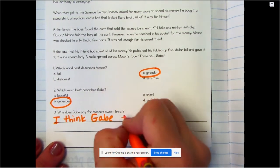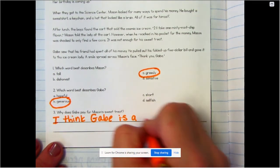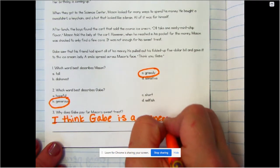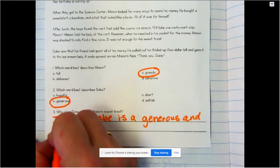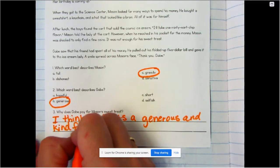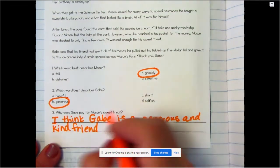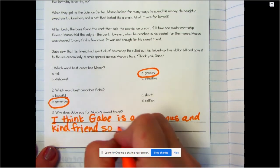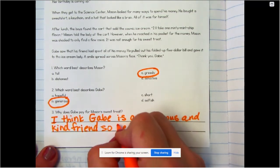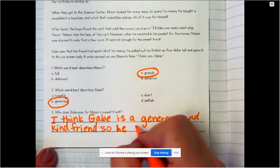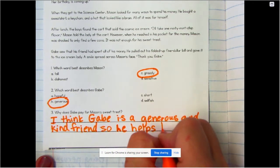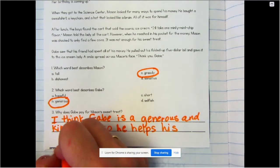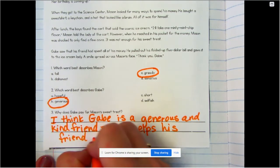Gabe is a generous and kind friend, so he helps his friend Mason.